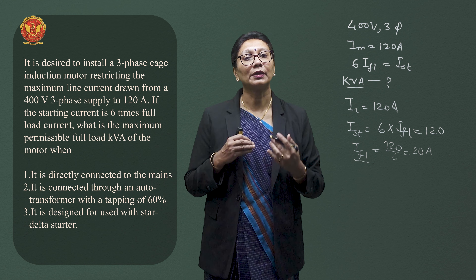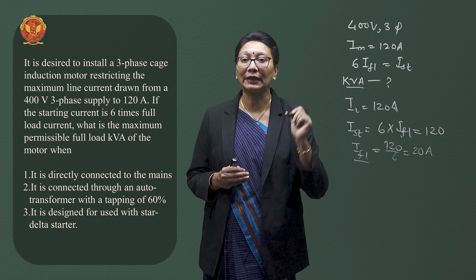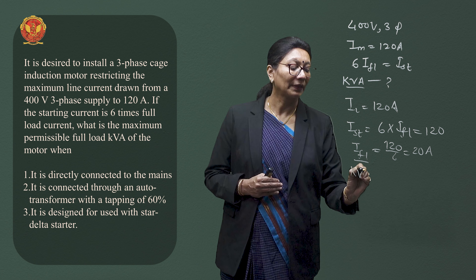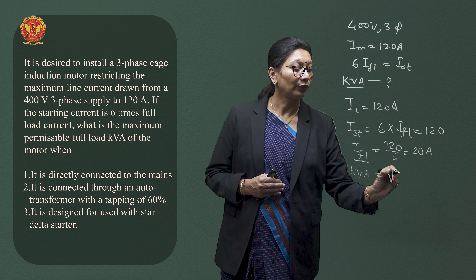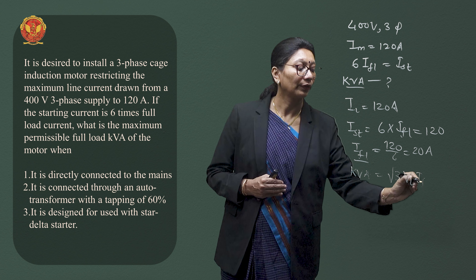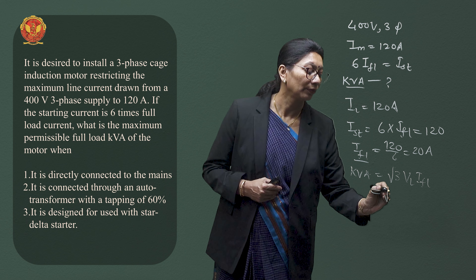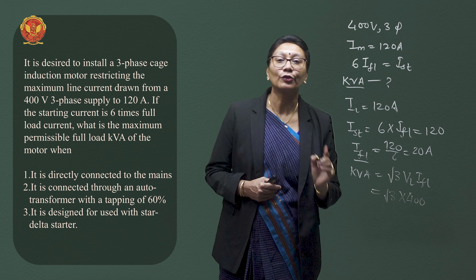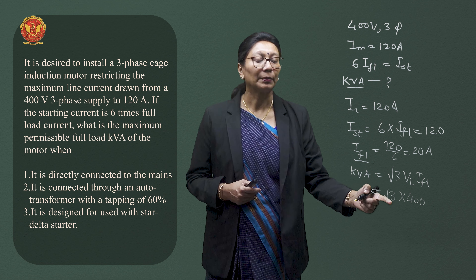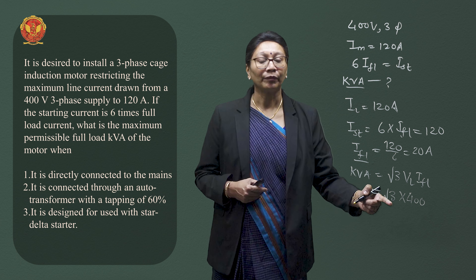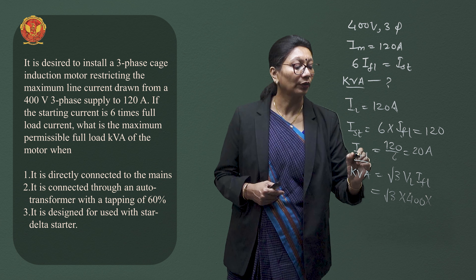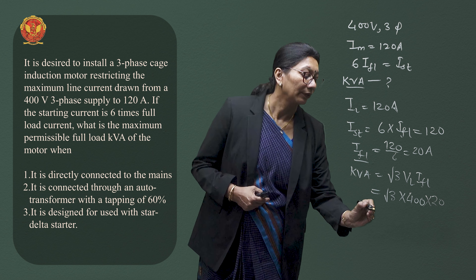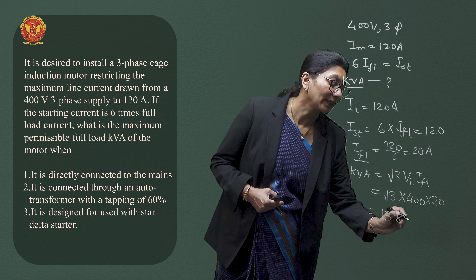The question asks for the maximum permissible KVA rating with these design parameters. For a three-phase machine, KVA equals root 3 times VL times full load current. With VL equal to 400V and full load current equal to 20A, we get a KVA rating of 13.856 KVA.